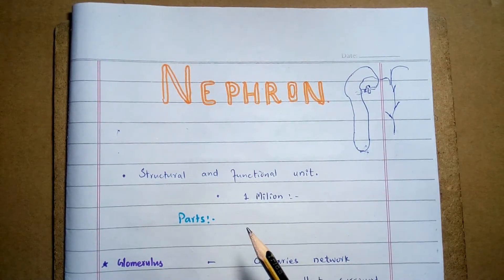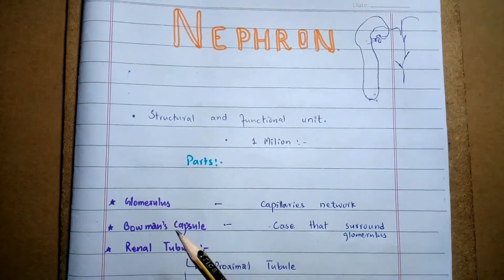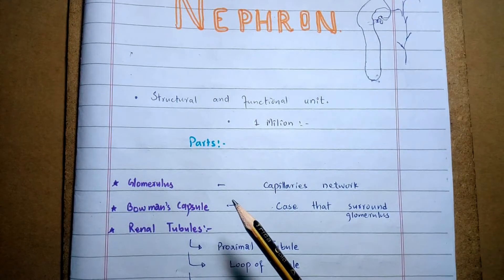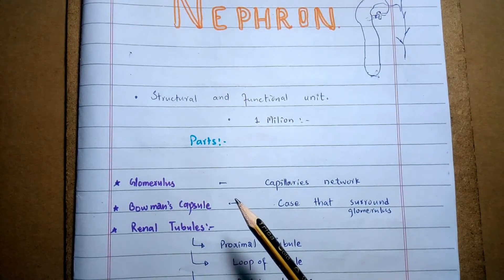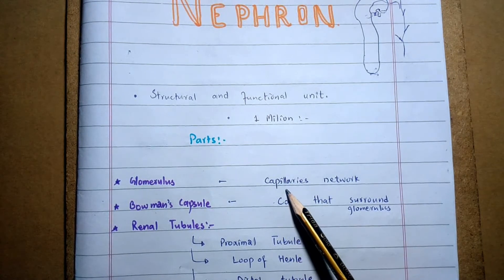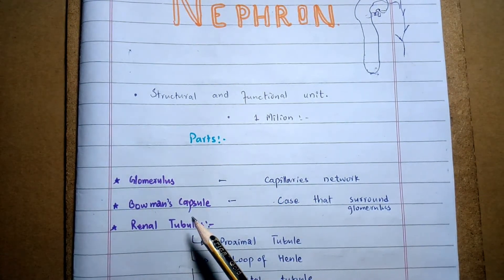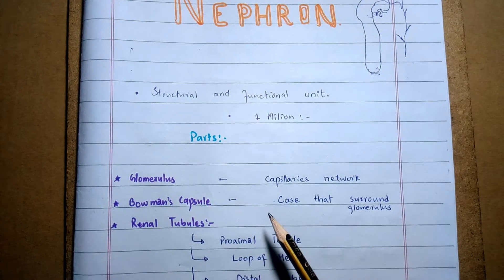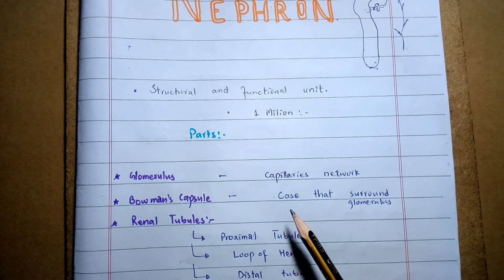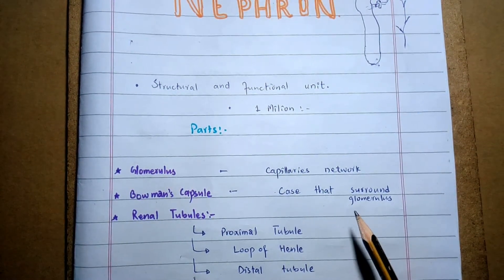Each nephron has various parts. Number one is the glomerulus, which is a network or tuft of glomerular capillaries through which blood is filtered. Then the Bowman capsule — the Bowman capsule is the structure in which the glomerular capillaries network lies; it is the case that surrounds the glomerulus.